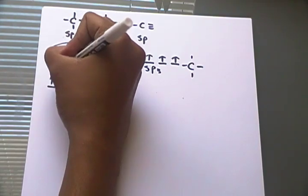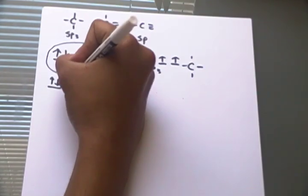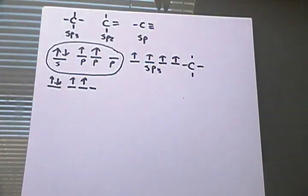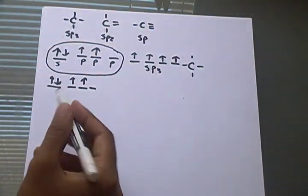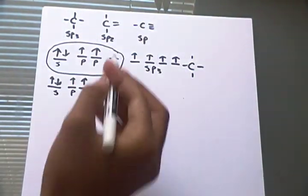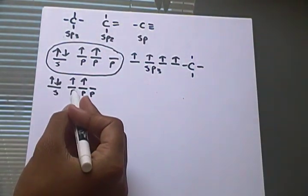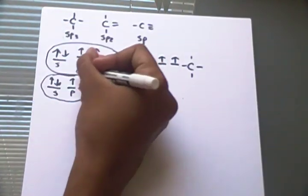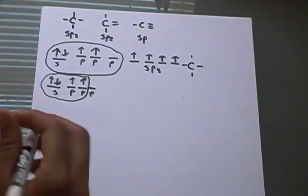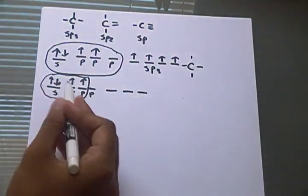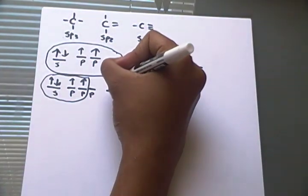Instead you get this. SP2, right. S, one, two P. Two P orbitals, one S orbital, come together. They'll give out three hybridized orbitals. As you can see, they'll come together and push out three hybridized orbitals.